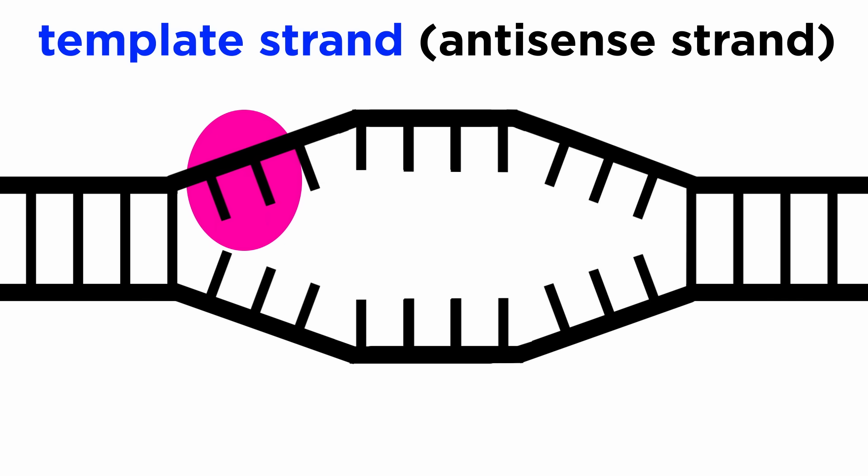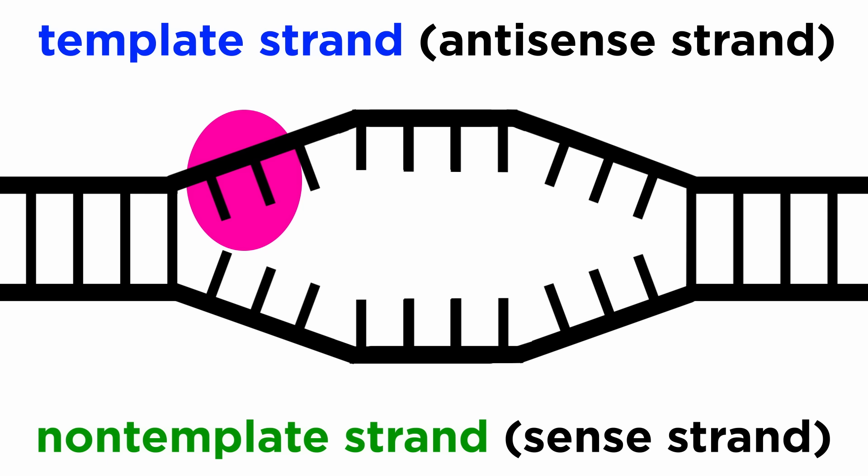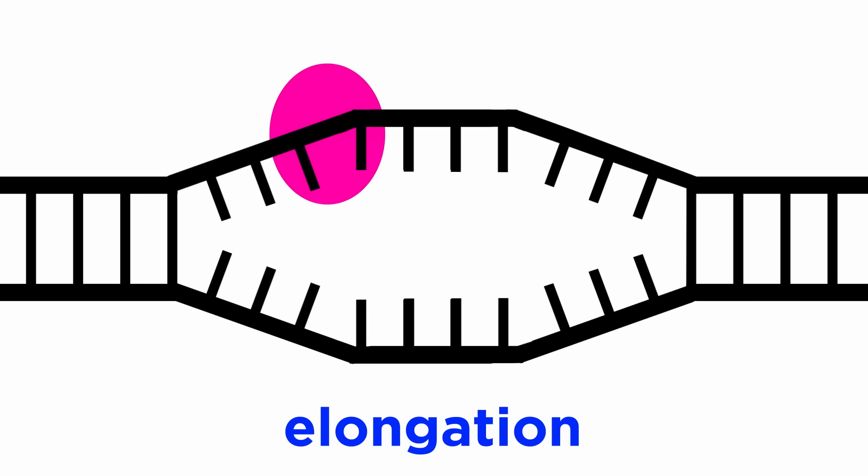One of the strands will serve as the template strand or anti-sense strand, meaning it will be used to generate the mRNA, and the other is the non-template strand or the sense strand. RNA polymerase doesn't need a primer. It simply initiates mRNA synthesis at the start point and then moves downstream along the gene in a process called elongation, synthesizing the mRNA as it goes.